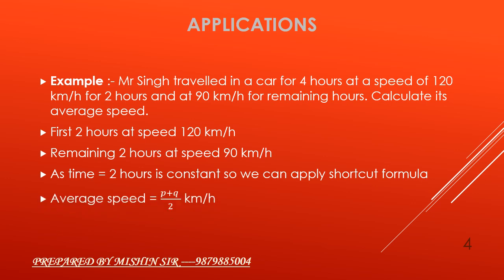Average speed is equal to (p + q) / 2 kilometer per hour, which is equal to (120 + 90) / 2 kilometer per hour, which is equal to 210 / 2 = 105 kilometer per hour.